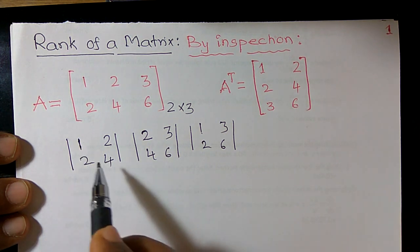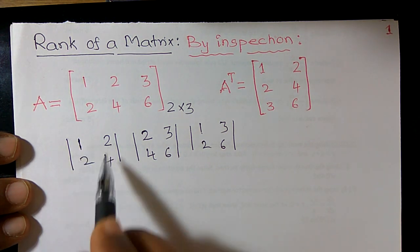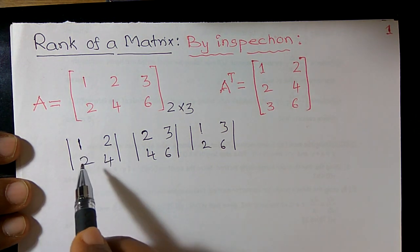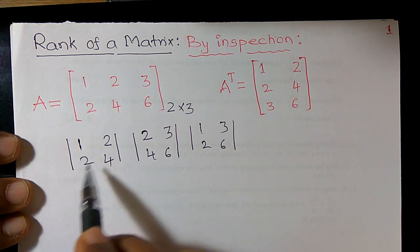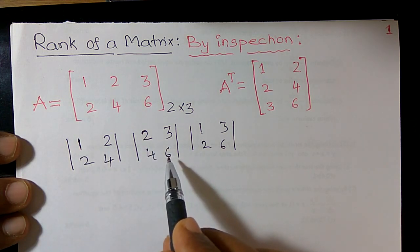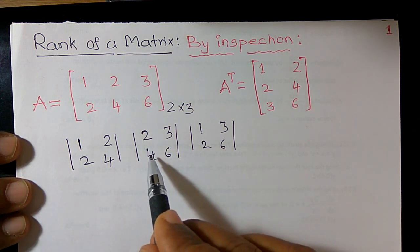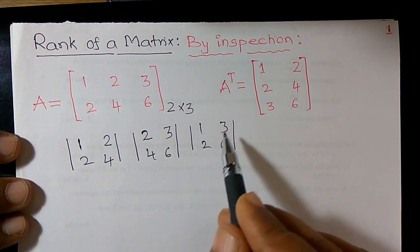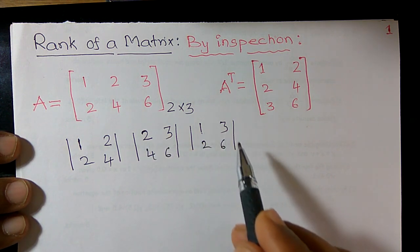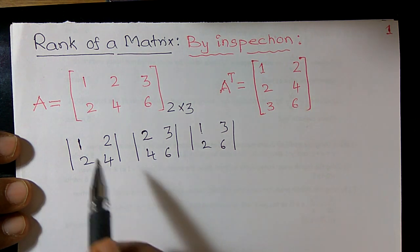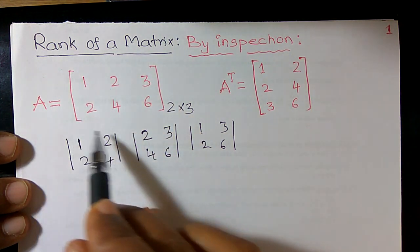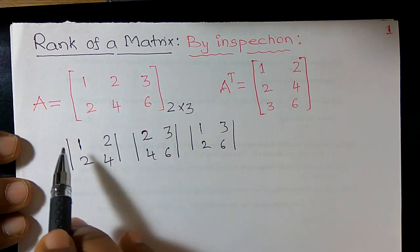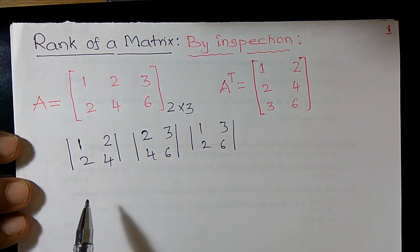Now I can expand these determinants. First: 1×4 = 4, 2×2 = 4, so 4 minus 4 = 0. Second: 2×6 = 12, 4×3 = 12, so 12 minus 12 = 0. Third: 1×6 = 6, 2×3 = 6, so 6 minus 6 = 0. It means all possible minors of this matrix are equal to 0.